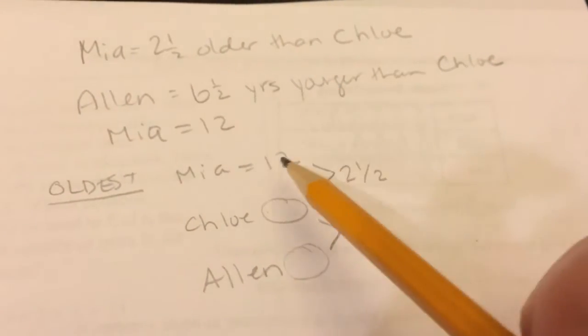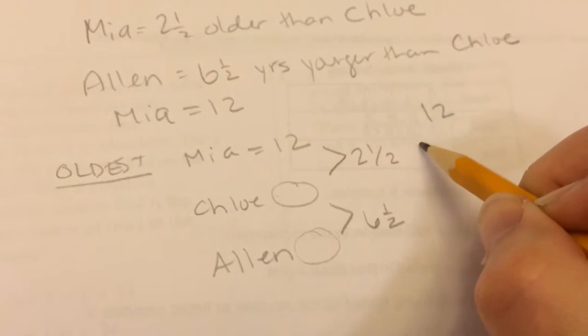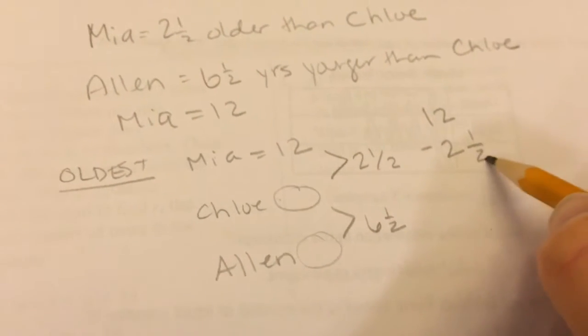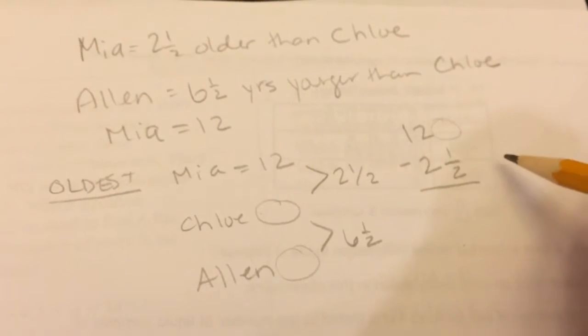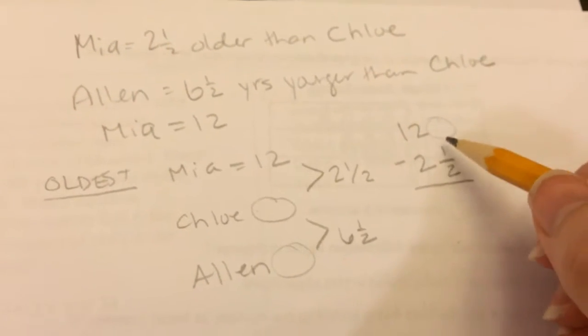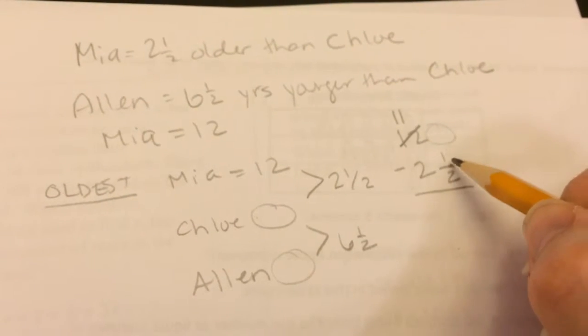Mia is 2½ years older than Chloe. So if I take Mia's age, which is 12, and subtract 2½, it'll tell me how old Chloe is. Well, I don't have a fraction right here. So I need to borrow or regroup. So I'm going to take one of the wholes away and make that 11.